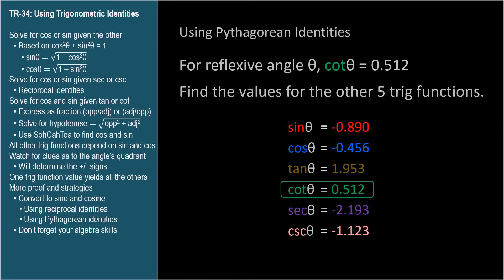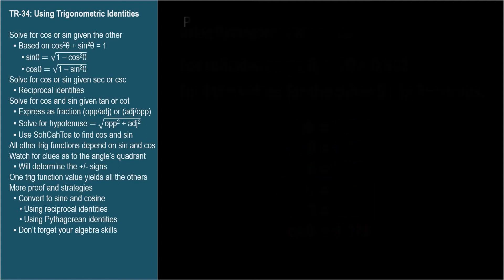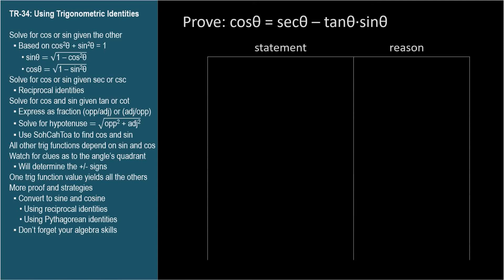Let's do a few more proofs that use the identities we've covered so far, the reciprocal and Pythagorean identities. Prove that cosine theta equals secant theta minus tangent theta times sine theta. We'll simplify the right-hand side, since it looks the most complicated, until it's the same as the left-hand side.